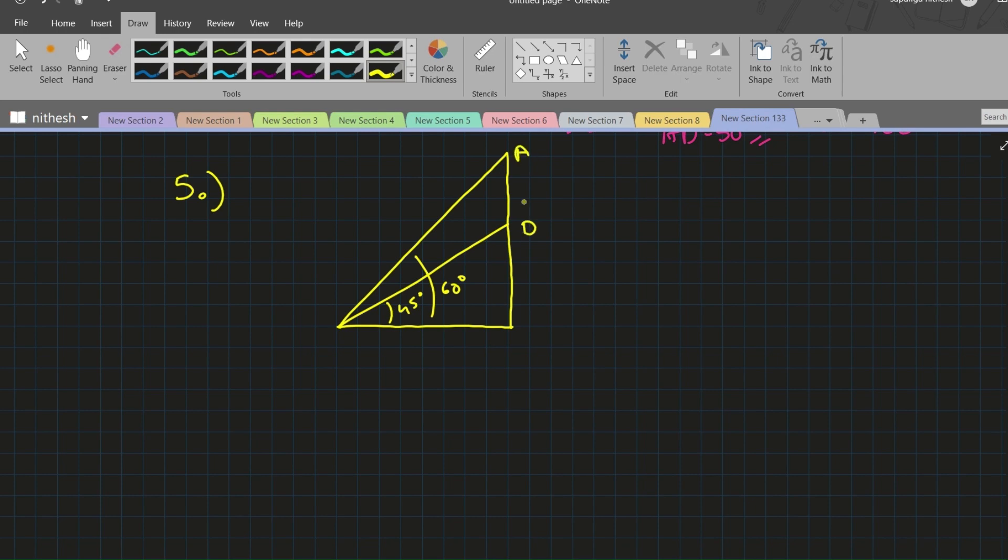We have triangle ABC where C is a 90-degree angle, and D is a point which lies on the side AC.